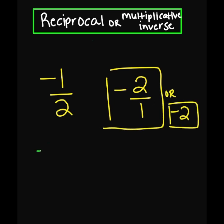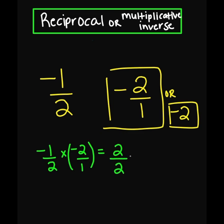Now to check your work, remember: negative 1 over 2 times negative 2 over 1. Checking the numerator: negative 1 times negative 2 is going to equal a positive 2. And the denominator: 2 times 1 is also going to equal 2. So 2 divided by 2 equals 1. So we know that negative 2 over 1, or negative 2, is the correct answer.